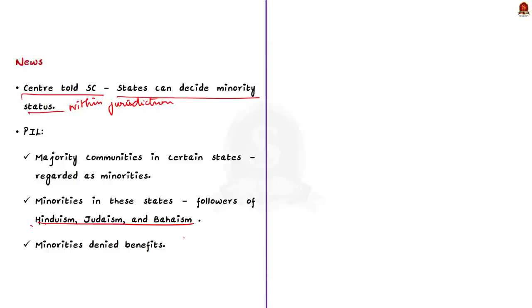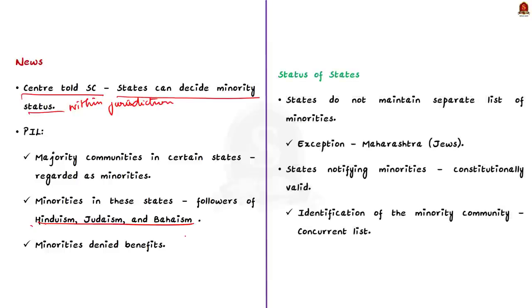But now, you may have a question of whether states have any hand in deciding minorities. Actually, states generally do not have their separate lists of minority communities, but there are exceptions. For example, Maharashtra has notified Jews as a minority community in this state. That means, only on special instances, minority community were notified by the concerned state itself. But generally, states do not notify minorities.